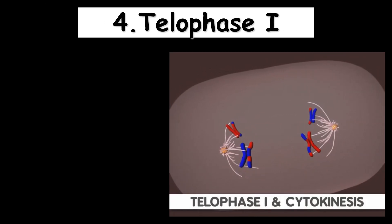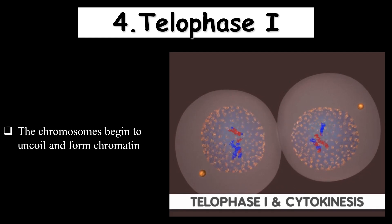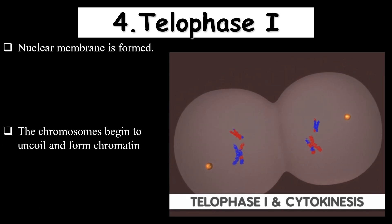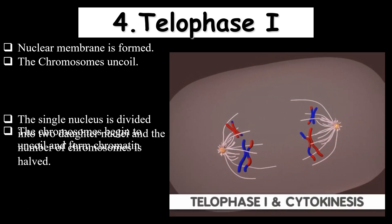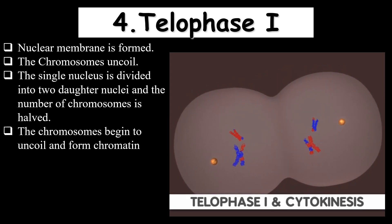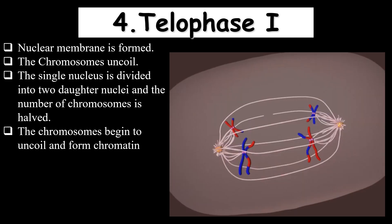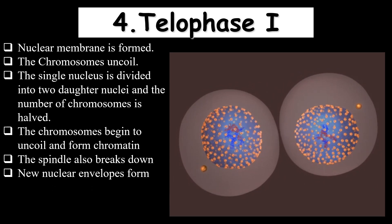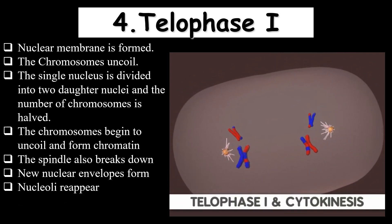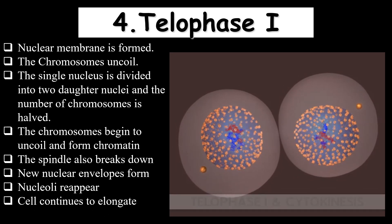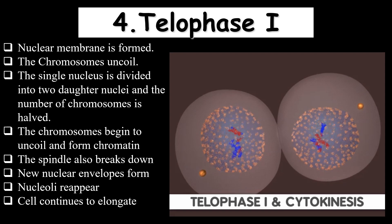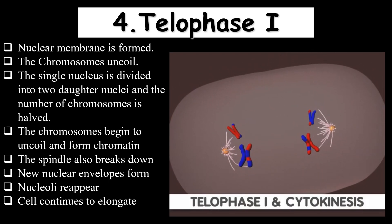As chromosomes reach opposite poles, Telophase 1 begins — the opposite of Prophase 1. The chromosomes begin to uncoil and return to chromatin form, the nuclear membrane is reformed, the nucleus divides (karyokinesis), and spindle fibers break down. Finally, the cytoplasm divides in cytokinesis, producing two daughter cells each carrying 23 chromosomes — half the number of the original parent cell with 46.